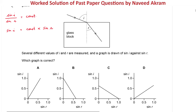Looking at the options: option A has a straight line which passes through the origin, so it can be the answer. Option B — the straight line doesn't pass through the origin, so this option is eliminated. Option C — the straight line doesn't pass through the origin, so this option is also eliminated. Option D — the straight line passes through the origin, so D can also be the answer.